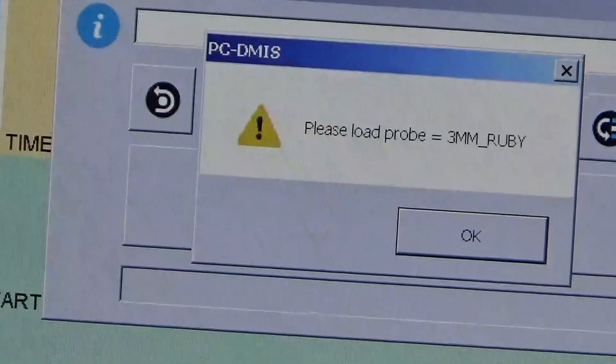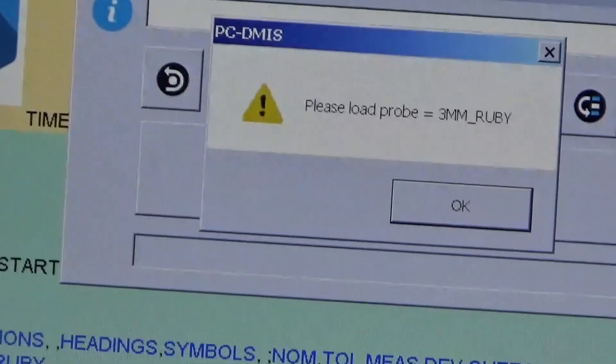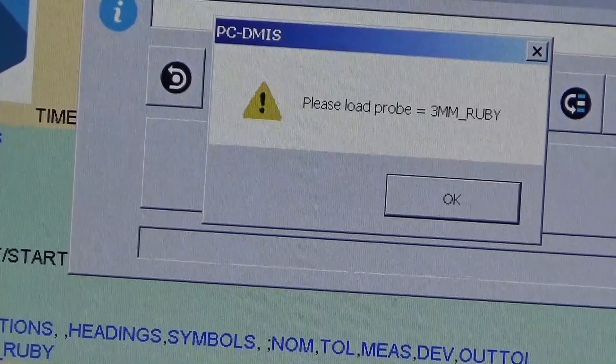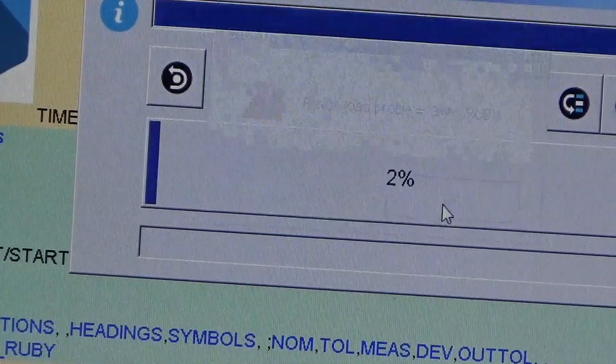As you can see here now it's saying please load the probe 3mm Ruby. That's the correct tip for this particular program. We'll just say OK here.